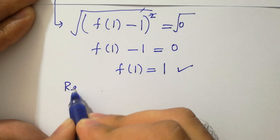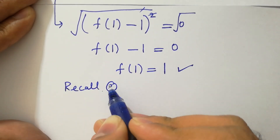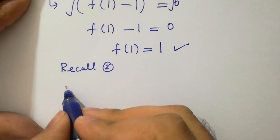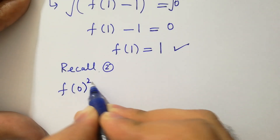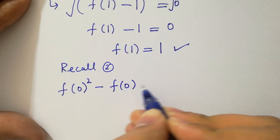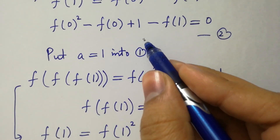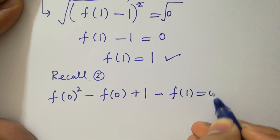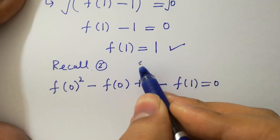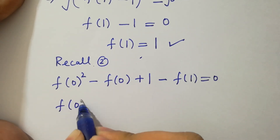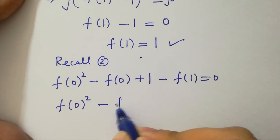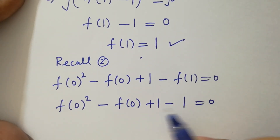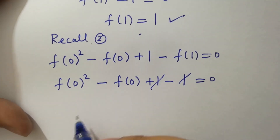Recalling the second equation, which is f of 0 squared minus f of 0 plus 1 minus f of 1 equals 0. Putting f of 1 equal to 1, we have f of 0 squared minus f of 0 plus 1 minus 1 equals 0. The ones cancel, leaving f of 0 squared minus f of 0 equals 0.